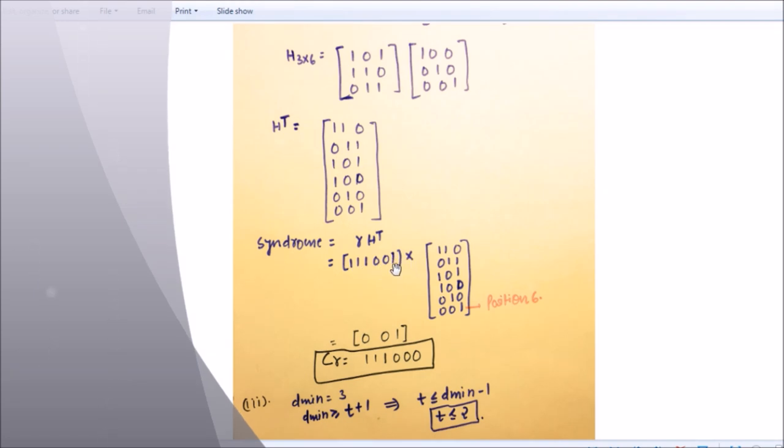H transpose means H transport. Here I reduced one step, I directly find here H transpose. This is H transpose equals R into H transpose, so 111000. Now I took here 1 at the place of error, just to reduce, so R into S transpose here. So 001, this is at position 6, so CR equals 11100. Now third is d minimum equals 3, and d minimum greater than or equal to t plus 1 implies t less than or equal to d minimum minus 1, so t less than or equal to 2.